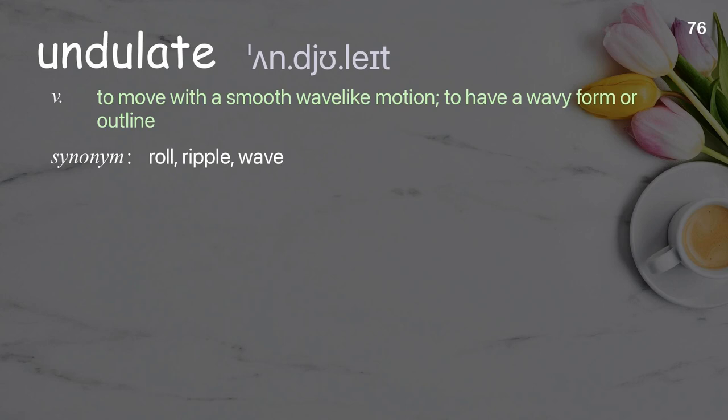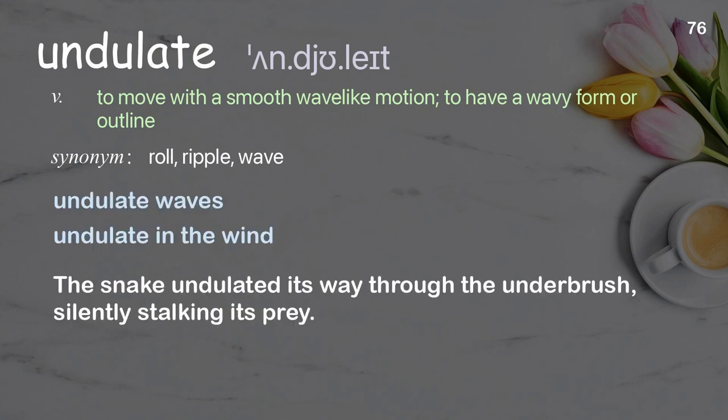Undulate: to move with a smooth wave-like motion; to have a wavy form or outline. Examples: undulate waves; undulate in the wind. The snake undulated its way through the underbrush, silently stalking its prey.